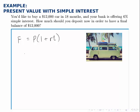So it's turning the question around, but we'll use the same formula and all we do is fill in the pieces that we know and solve for the one that we don't. So, the future value, the amount we'd like to have in the future is $12,000.